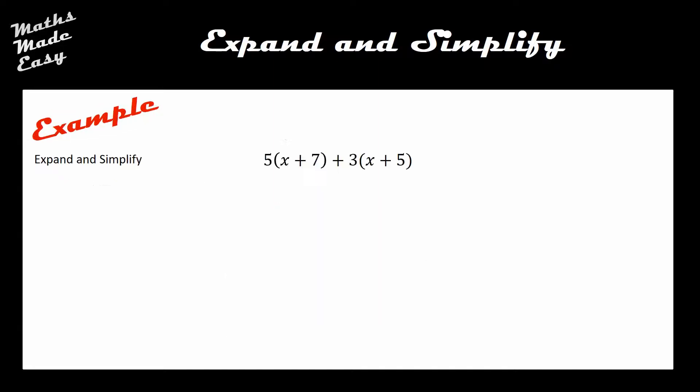Let's have a look at how we do these. To start off, this is a similar question but not the same. I'm going to expand the brackets as I know how to do, and then simplify whatever terms I'm left over with. Here I can see I've got 5 multiplied by x which is 5x, and 5 multiplied by positive 7 which is positive 35.